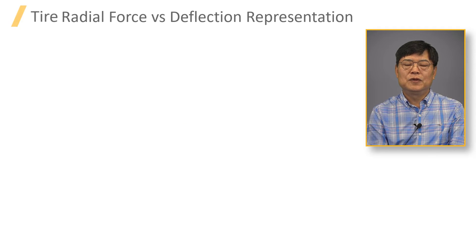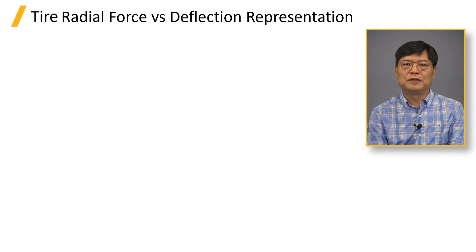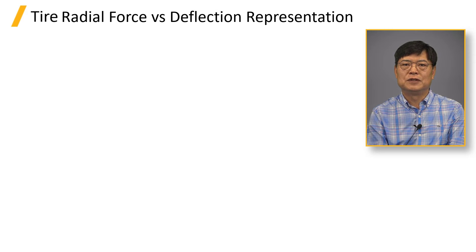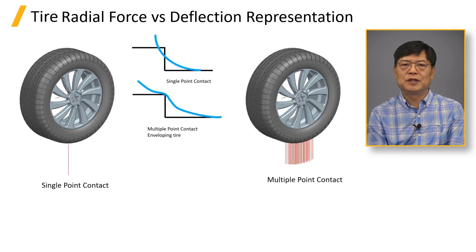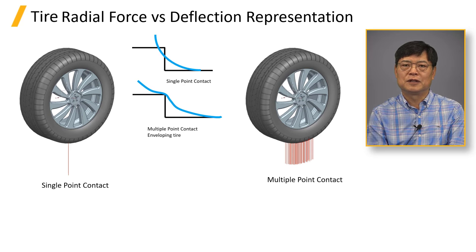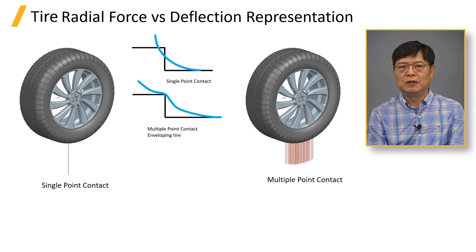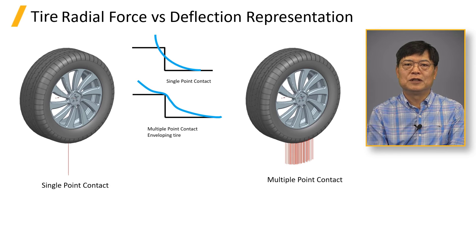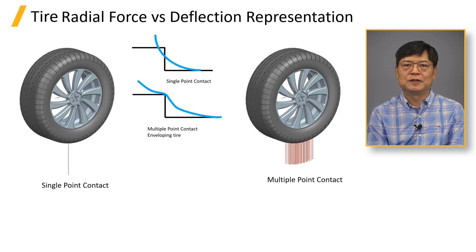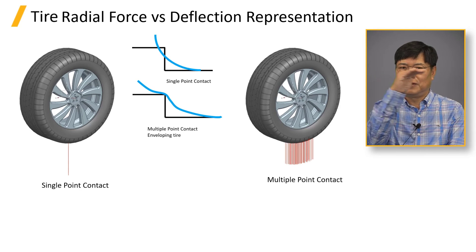Tire radial force versus deflection representation. Many ANSYS Motion customers want to simulate rough road. Tire models have two types of calculating tire radial force. The point follower model only calculates the single point contact between tire and the road. The point follower model does not have a tire enveloping capability so that it cannot properly simulate substantial road profile change such as a step in the figure.